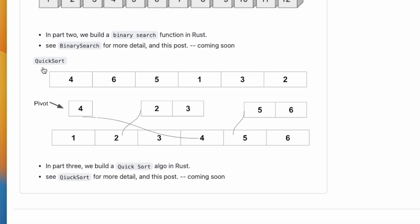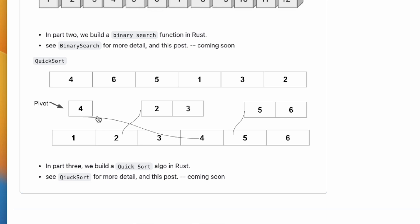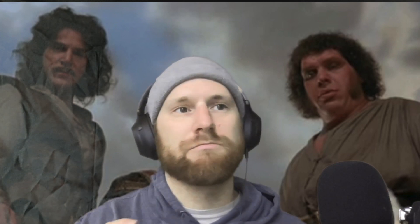That's what I want to talk about today — quicksort. We're going to do this in Rust. Here's a visual of quicksort: if you've never heard of it, you have a list or array of unordered items and you need to sort it. The concept really uses recursion, breaking the problem down into manageable bits. You pick what they call a pivot — that's either the first or the last item in the list.